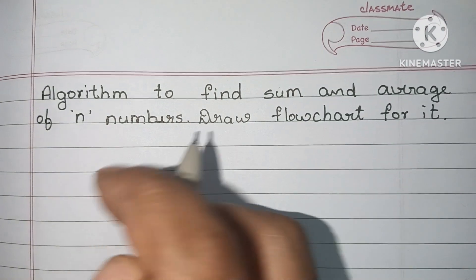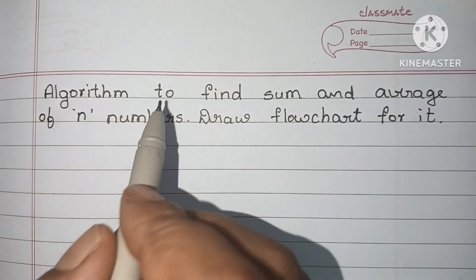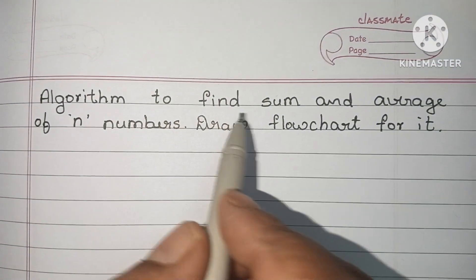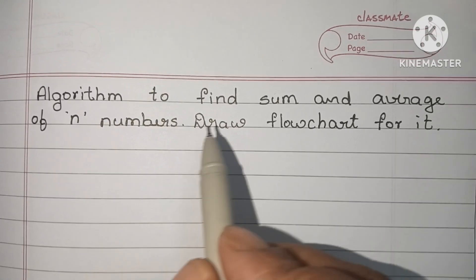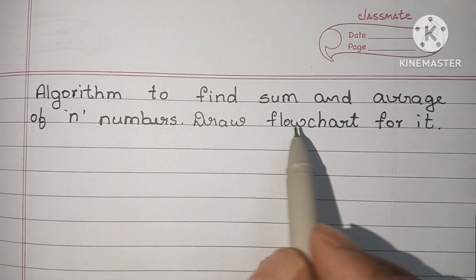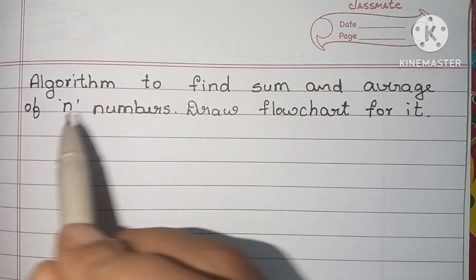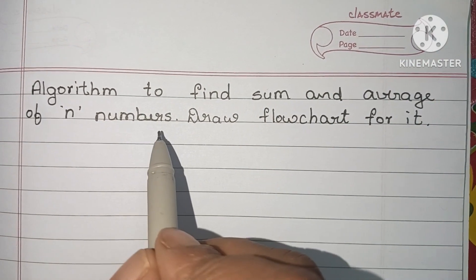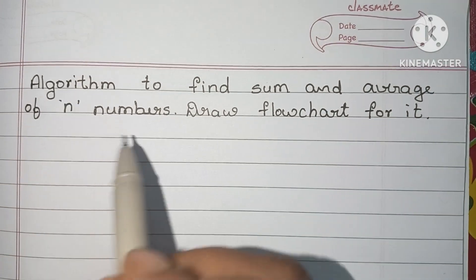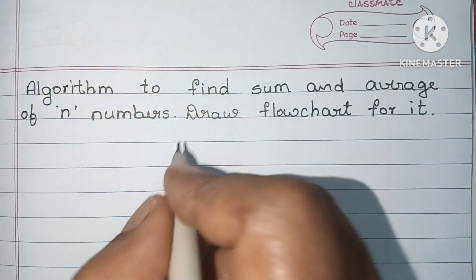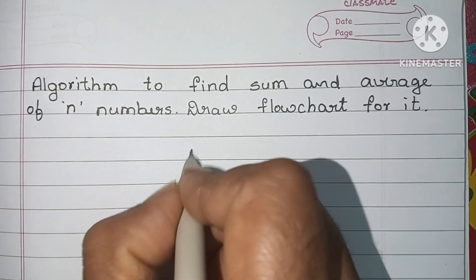In this video we are going to learn how to write an algorithm to find sum and average of n numbers and draw a flowchart for it. Here we have to find sum and average of n numbers using algorithm and flowchart. First we are going to write the algorithm.